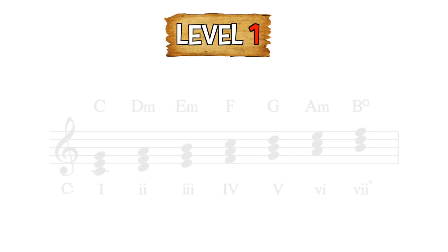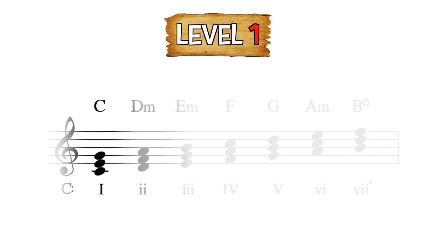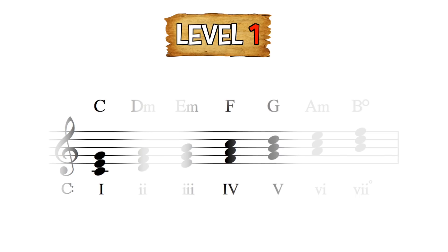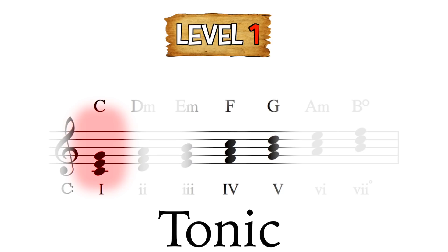We are going to start this chord journey with 3 chords from the key of C: the I chord C major, the IV chord F major, and the V chord G major. Important to know here is that the I chord is known as the tonic, and all the other chords want to return to the tonic chord, or the home chord.